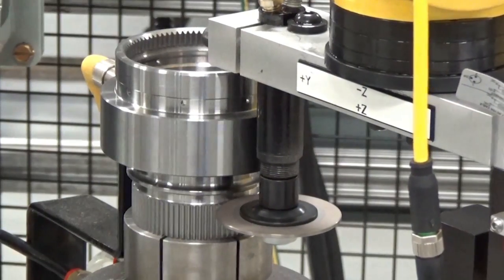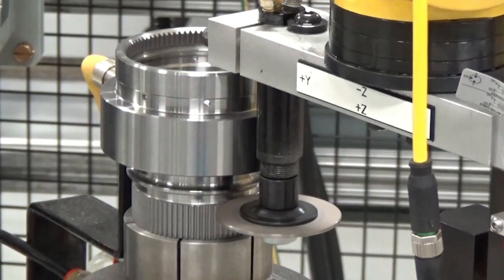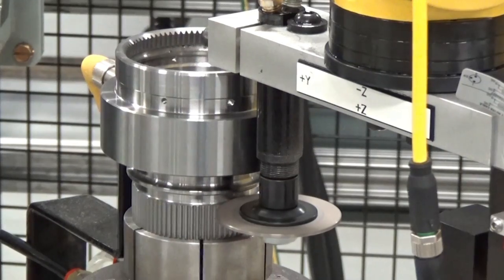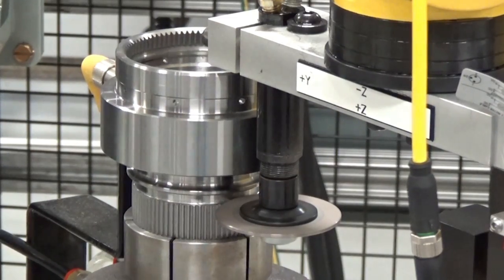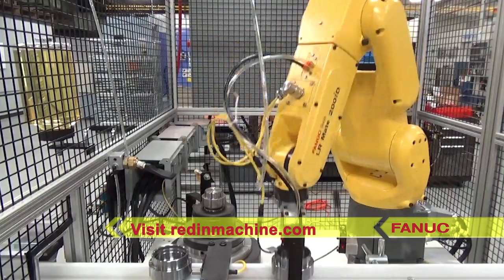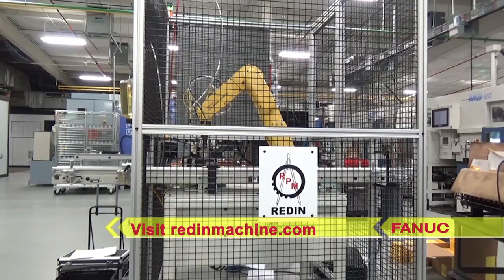This one-of-a-kind robotic deburring system is just one of many high-performance automation solutions developed by Redden Production Machine for their satisfied customers. To learn more about Redden Production Machine, please visit www.reddenmachine.com.